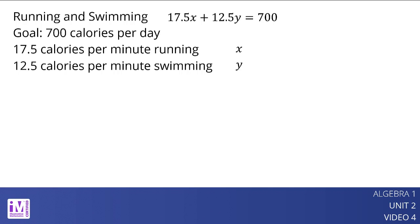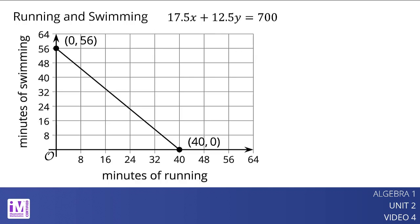Here is a graph of the equation. How does the equation relate to the graph? The values where the line intersects the vertical and horizontal axes, 56 and 40, are not in the equation, but we can reason about where they come from.